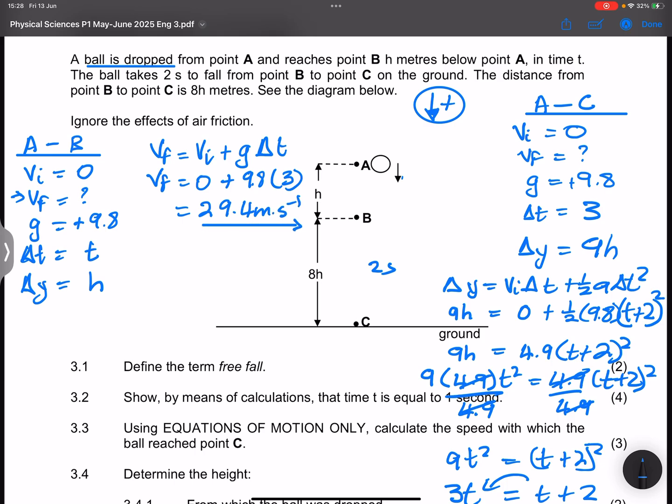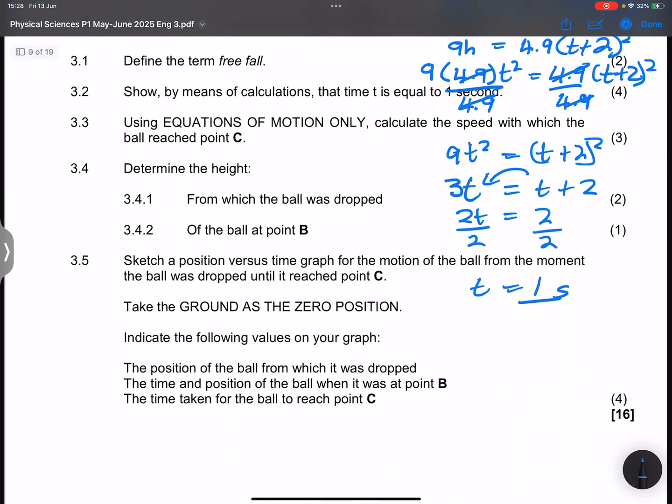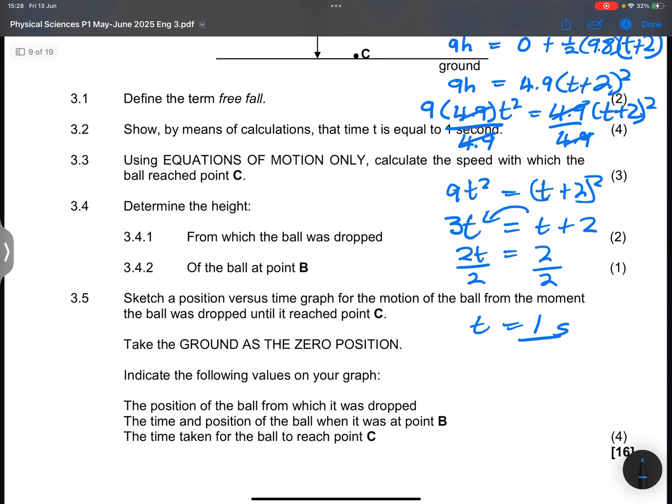So that's 29.4 meters per second. That is our velocity at point C.